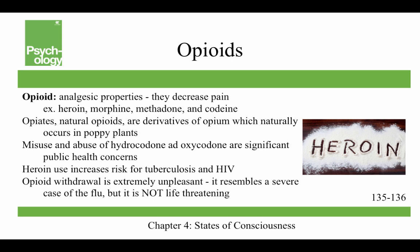Opioids have analgesic properties, meaning they decrease pain. Examples include heroin, morphine, methadone, and codeine. Opiates, which are natural opioids, are derivatives of opium, which naturally occurs in poppy plants. The misuse and abuse of hydrocodone and oxycodone are considered significant public health concerns because they're prescription drugs that are often abused and over-prescribed. Heroin use also increases the risk for tuberculosis and HIV, primarily because intravenous injection is a common route of administration. Opioid withdrawal is extremely unpleasant and resembles a severe case of the flu, but it is not life-threatening.